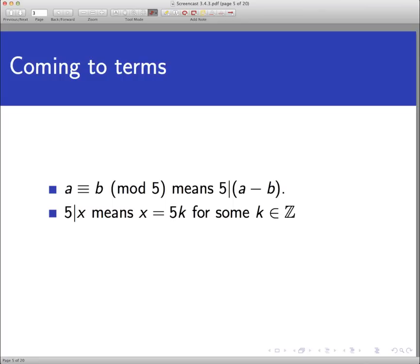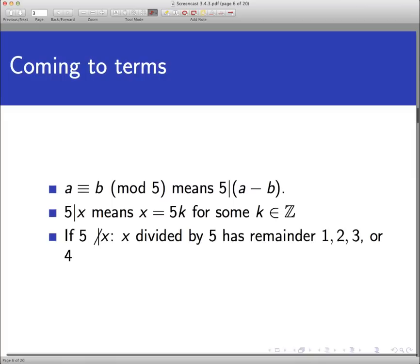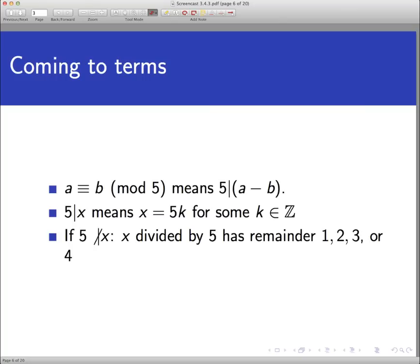We need to think about what it means for 5 not to divide x. On the surface it means there is no integer k such that x equals 5k. But digging deeper: if 5 doesn't divide x evenly, then it must divide with a remainder. That remainder can only be 1, 2, 3, or 4. It can't be 0 because then 5 would divide x evenly, and it can't be 5 or larger because in long division you could just divide again.